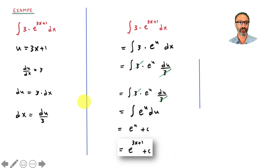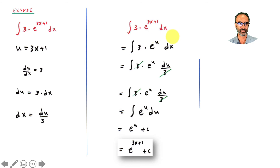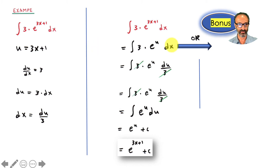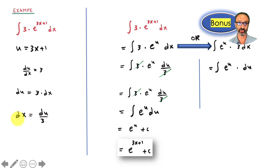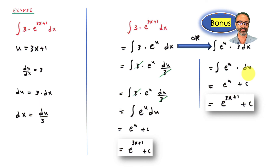Here's a bonus shortcut: instead of solving for dx separately, notice that the 3 combined with dx is exactly the derivative of u, which is du. You can just move the 3 directly and recognize that 3 dx equals du right away, skipping extra steps. After more practice in calculus, you'll do substitution quickly without all this writing.